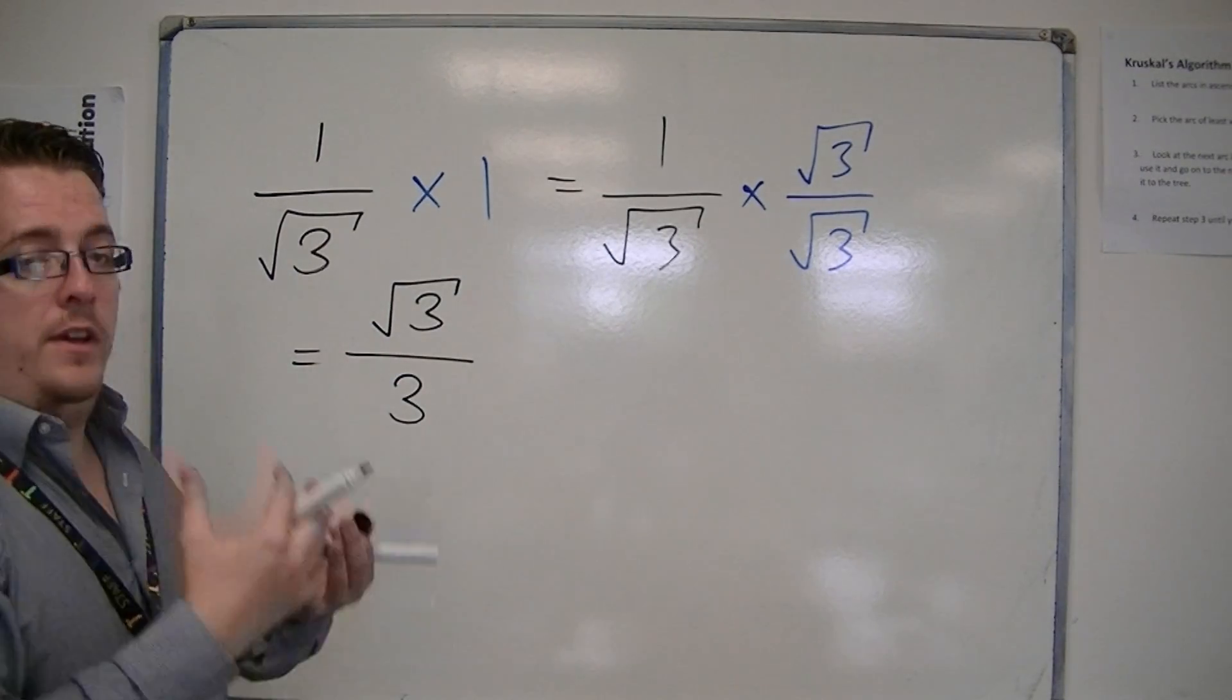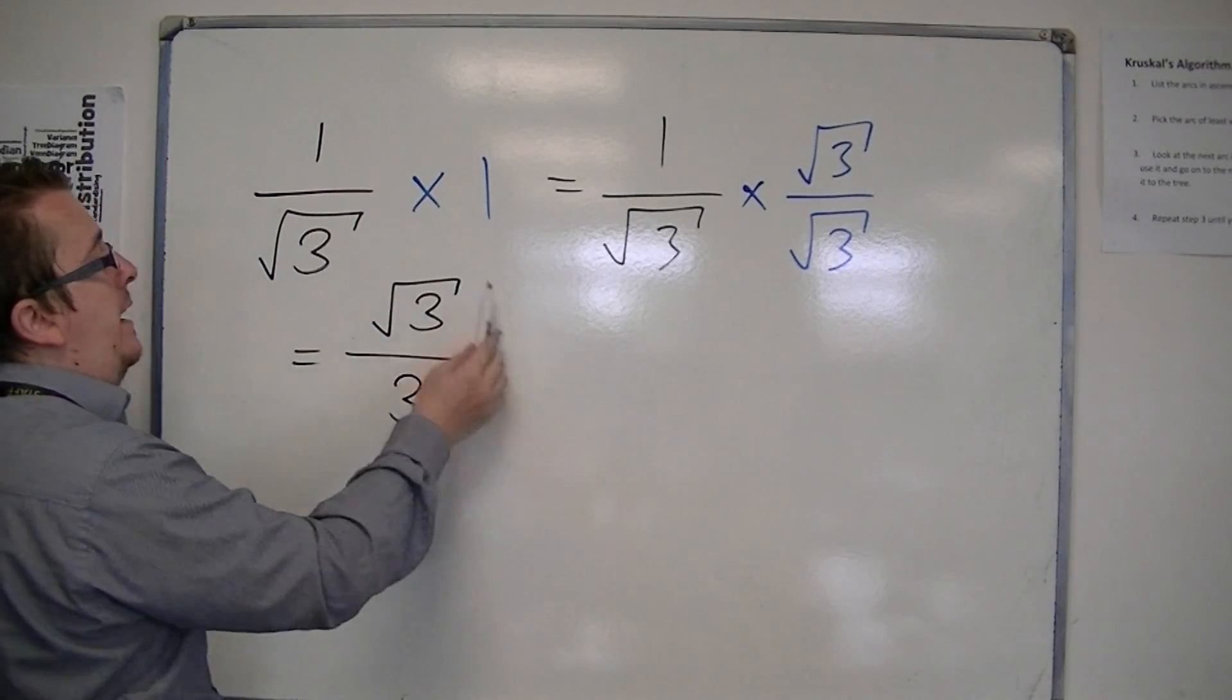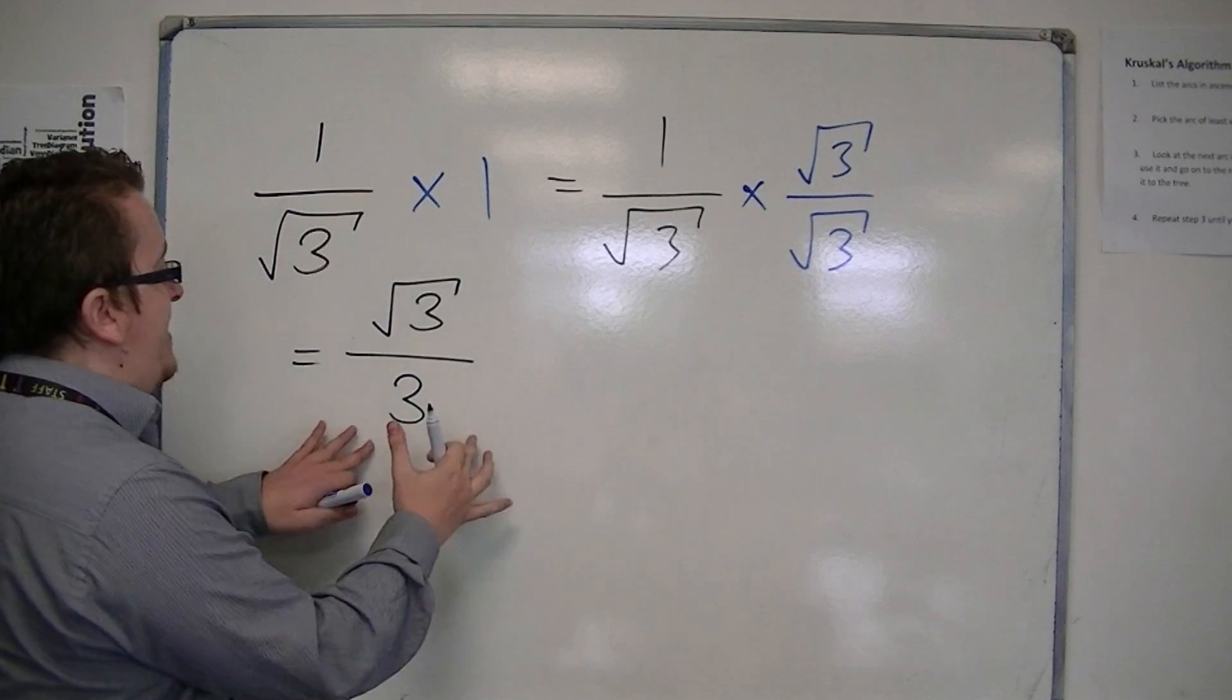So, in actual fact, what I can say is that 1 over root 3 is the same thing as root 3 over 3. The denominator is now rational.